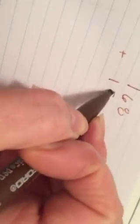I'm going to solve the problem 168 plus 157 using an algorithm. So this column represents the ones, this column represents tens, and this column represents hundreds.